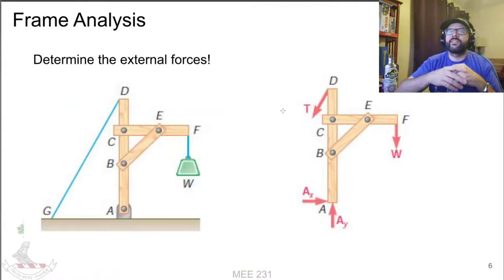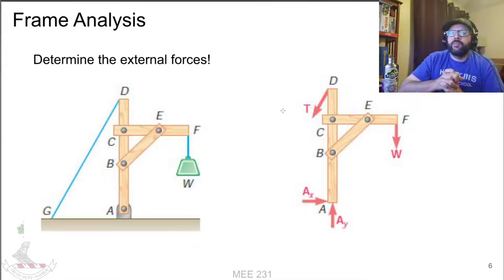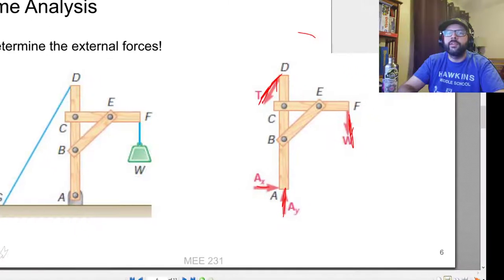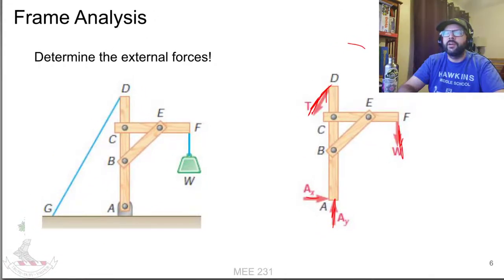So how do we analyze this? First off, start with the external forces. You've got some sort of tension going on here, the tension here, the weight here, and your reactions here. In this particular instance, this is a pinned connection at this end as well, so there's no moment reaction.